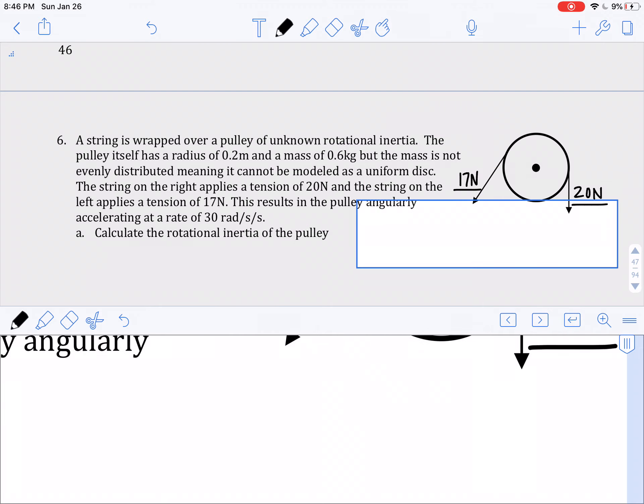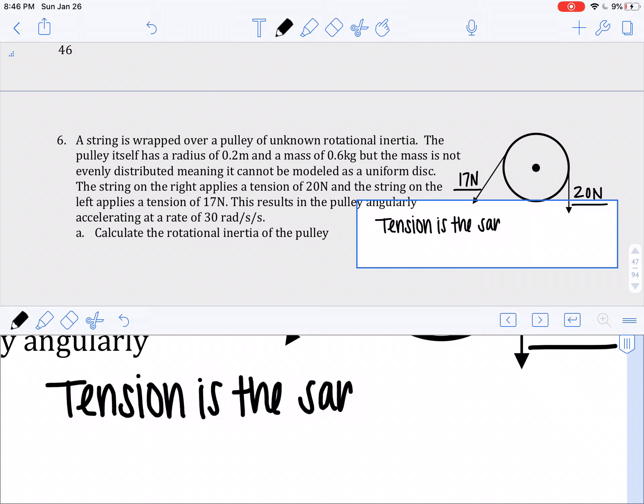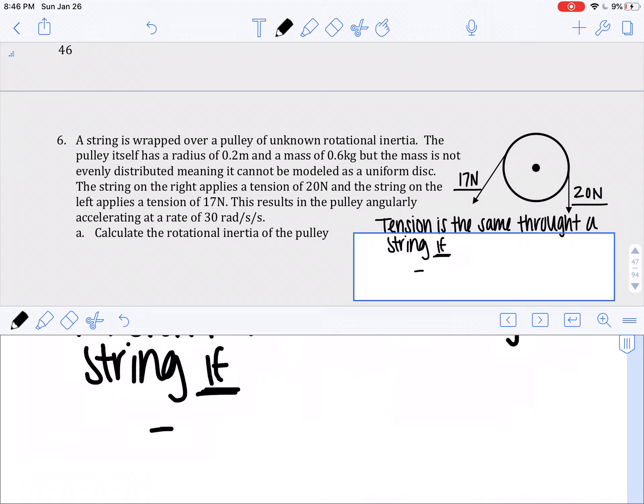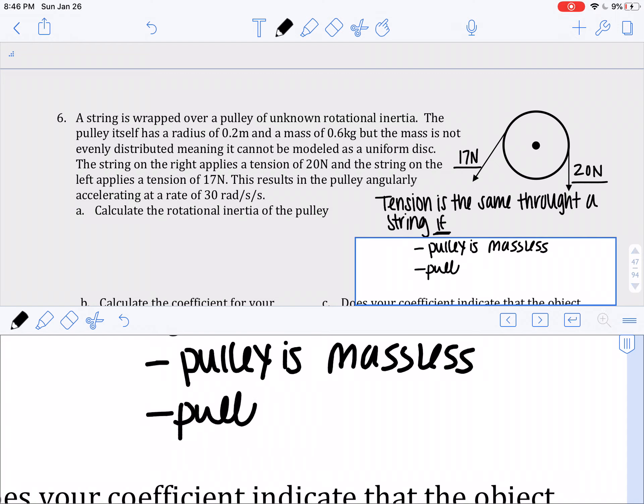So the important thing is the tension is the same in the string if a few different things are happening. And maybe some of you are thinking this. So if the pulley is massless, the pulley is not accelerating. That's the one I would guess that most of you would think of.